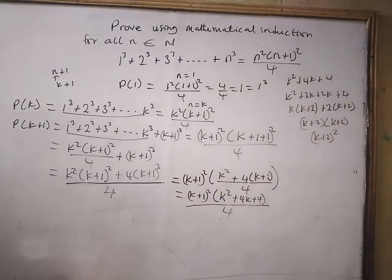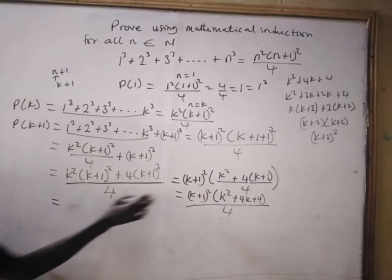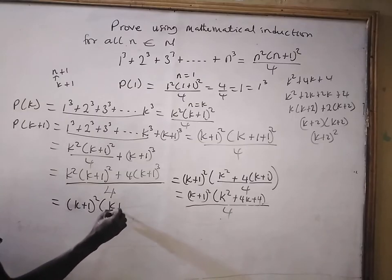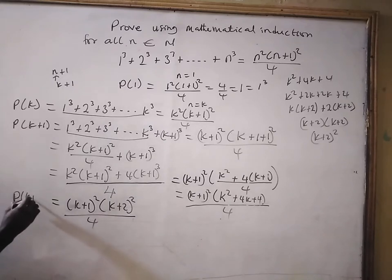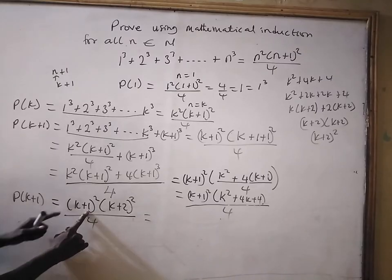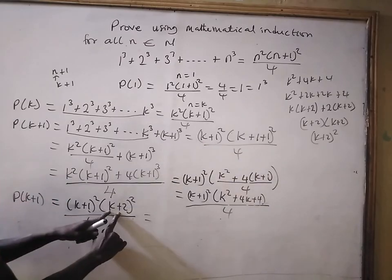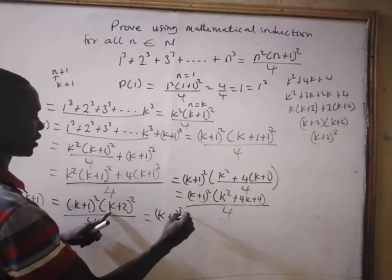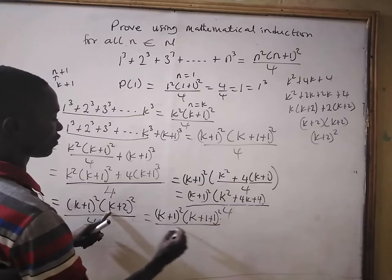So we are going to have (k+1) squared times (k+2) all squared, all divided by 4. And this equals (k+1) squared times bracket (k+1) plus 1 all squared, all divided by 4.